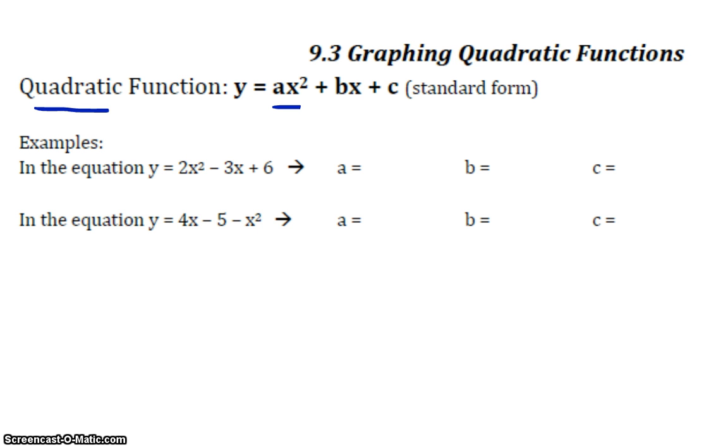And c is always that extra number added on. It doesn't have an x with it, something that we call a constant. So a is always the coefficient of the x squared term, b is always the coefficient of the x term, and c is always the constant added on.